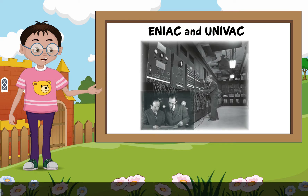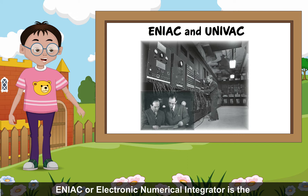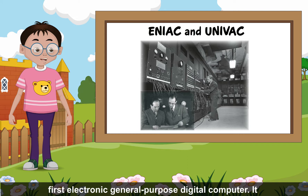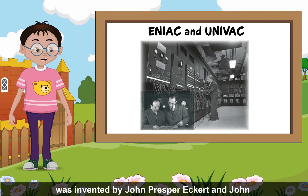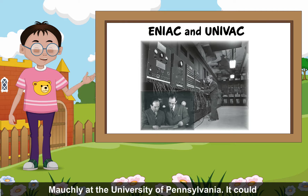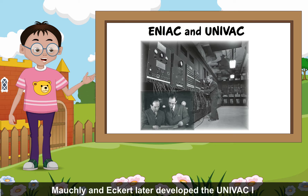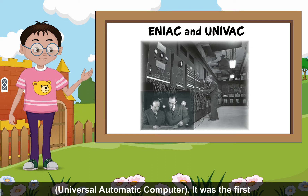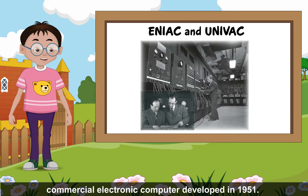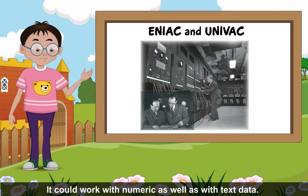ENIAC and UNIVAC: ENIAC, or Electronic Numerical Integrator and Computer, is the first electronic general-purpose digital computer. It was invented by John Presper Eckert and John Mauchly at the University of Pennsylvania. It could be programmed to solve different computing problems. Mauchly and Eckert later developed UNIVAC — Universal Automated Computer — the first commercial electronic computer, developed in 1951. It could work with numeric as well as text data.